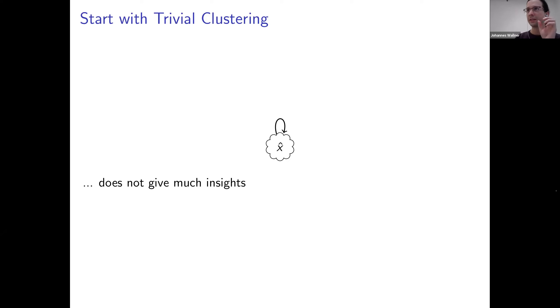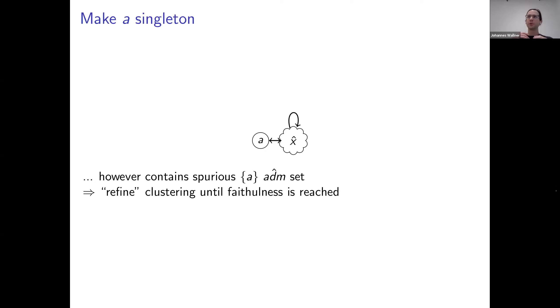And now in our approach, we let the user then decide on which argument we want more information. And in our case, this is S, because this is the argument we are mainly interested in. And then we approach this by making this particular argument concrete. So we make it a singleton and keep everything else still abstract, still clustered in one big cluster. But actually now in this particular situation, the set containing just S is actually spurious with respect to admissible sets.